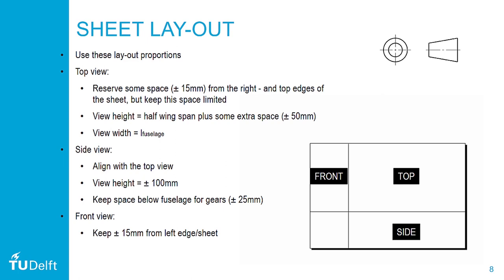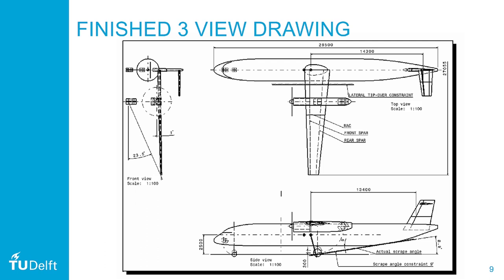The front view can be kept about 50mm away from the left edge of the sheet. It should be aligned with the top view, so that determines the position in the vertical direction. Your finished three-view drawing will look something like this. First, you will have to come up with the cross-section of the aircraft, and Joris Melkert will tell you the details about that.